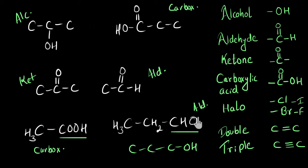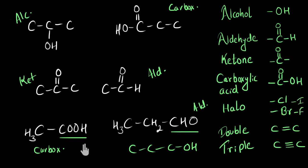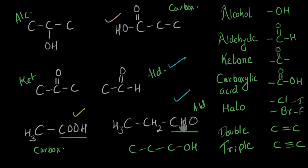Out of all six molecules, which two will have similar chemical properties? Compounds which have the same functional groups have the same chemical properties. We can see two molecules with carboxylic acid functional groups — those two will have similar chemical properties. And similarly, we see two aldehydes — those two will also have similar chemical properties.